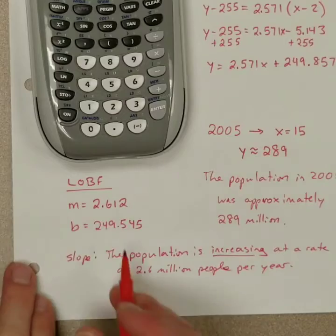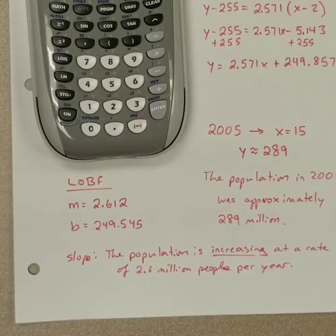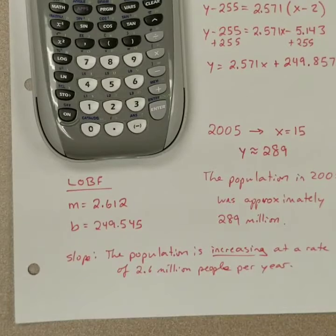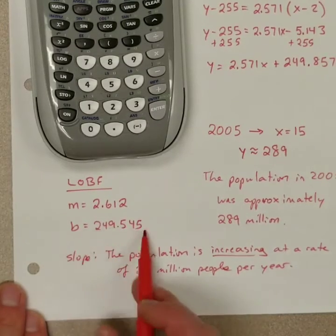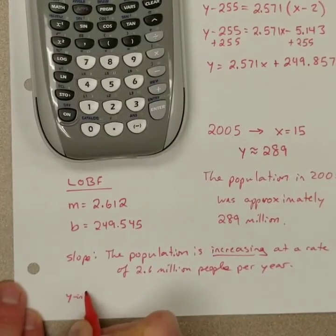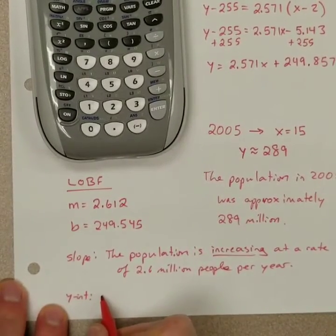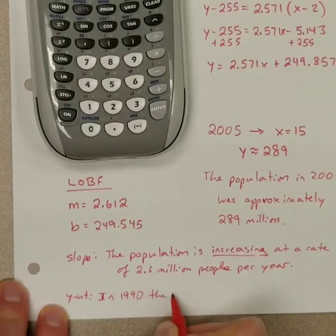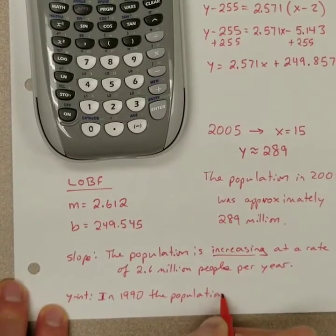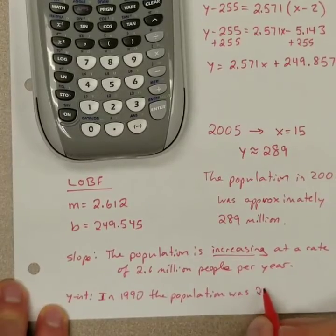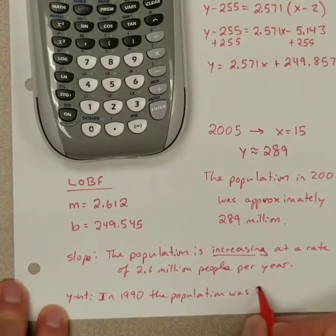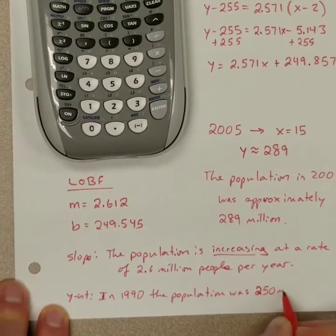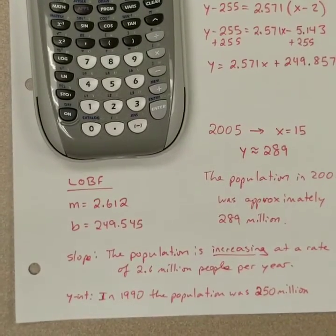The Y intercept then gives us the population at the beginning which in our case at year 0 is 1990, right? We corresponded 0 to 1990. So the Y intercept is always the year 0. So we'd say in 1990 the population was about 250 million if I round it.